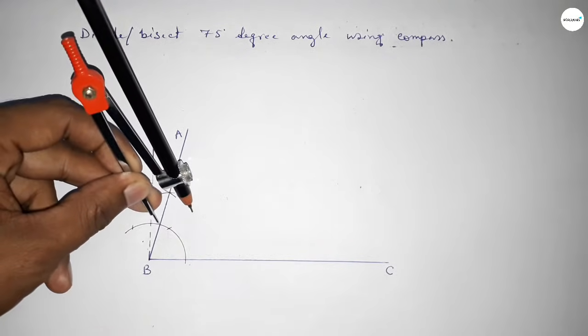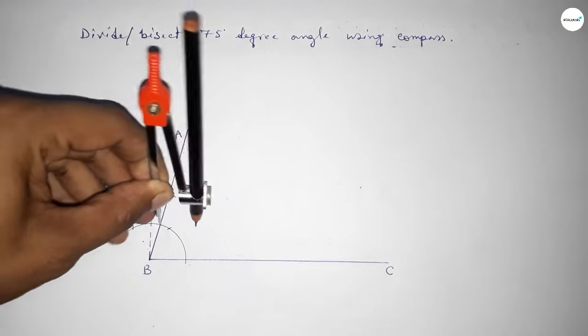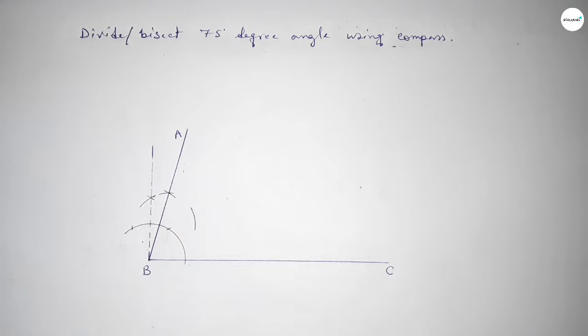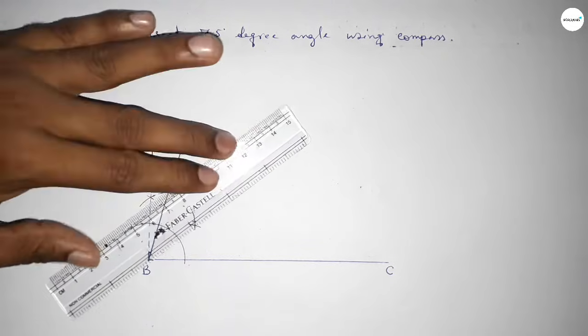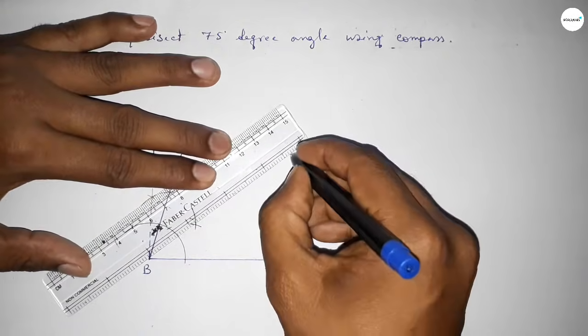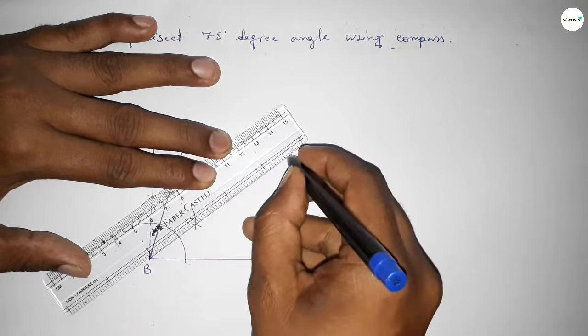So taking same length and putting the compass here and drawing an arc here with same length and putting the compass here and cut here. So both the curves intersect at a point. Now joining this line to bisect the 75 degree angle.